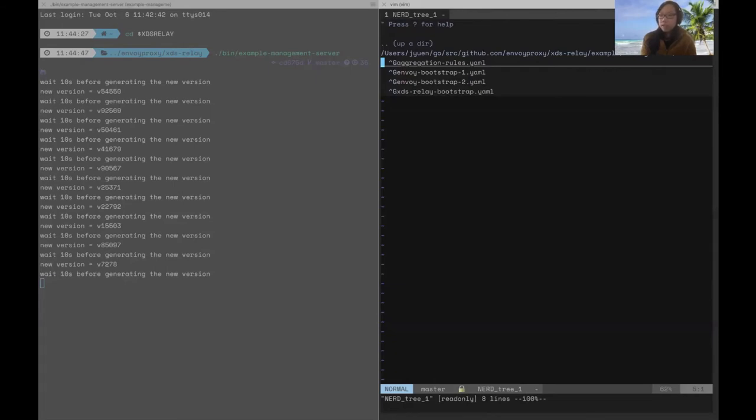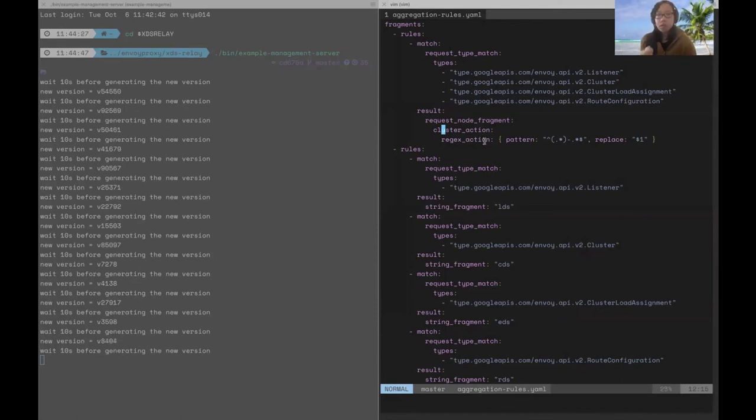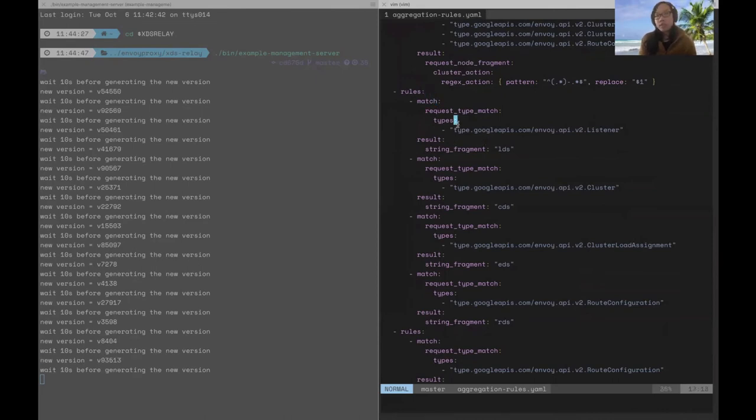Finally, let's take a look at the XDS Relay aggregation rules. And these rules might look quite intimidating at first, but it's actually pretty easy to understand. So, it's going to end up generating keys that look like staging underscore EDS or staging underscore CDS. And how that works is via these fragments. So, for the first fragment, we look at these request types that fall under LDS, CDS, EDS, or RDS. And we apply this regex match and replace operation on the node cluster. So, because in our Envoy bootstrap files, we had the node cluster set to staging. This will actually always result in staging as the first cache key fragment.